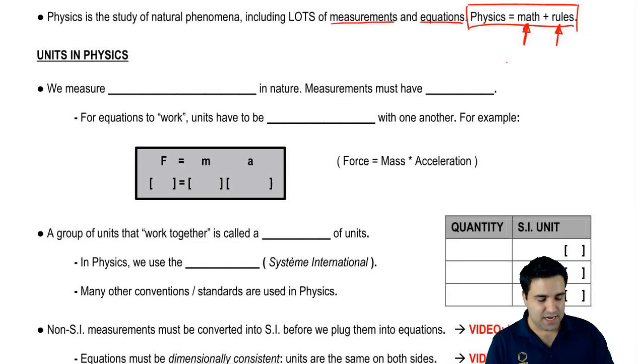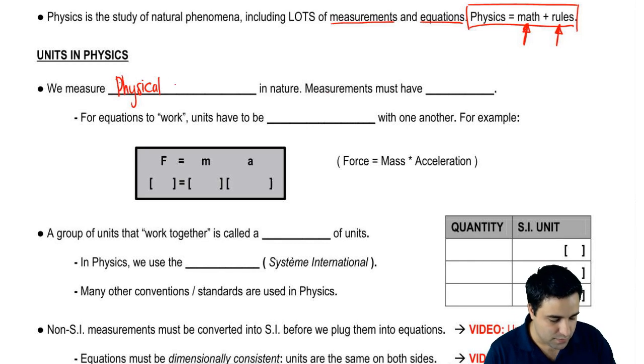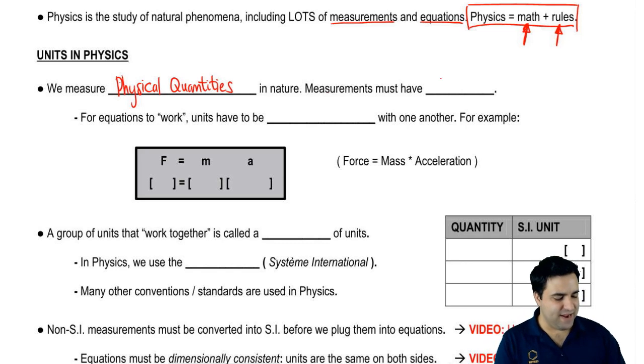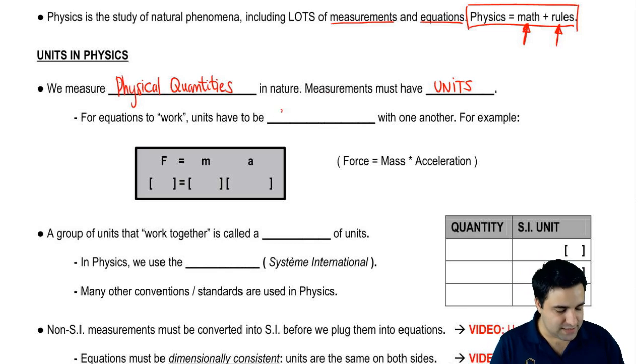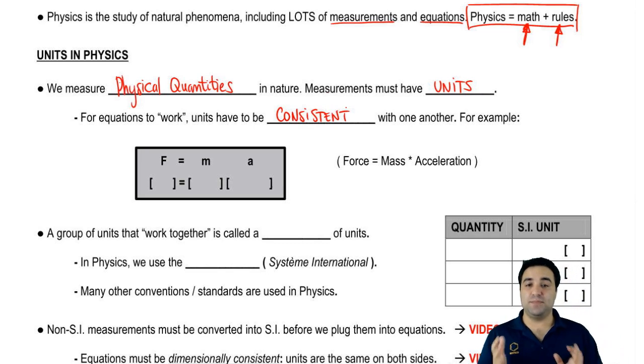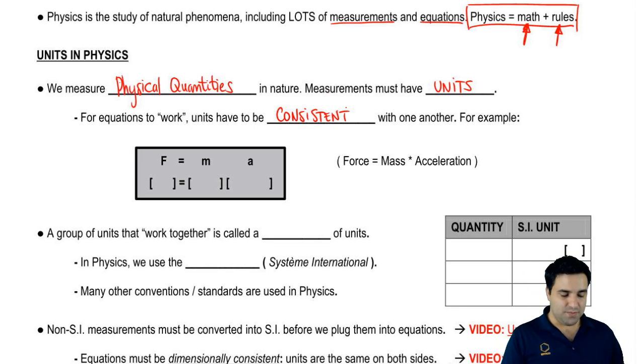In physics and in any other science, we measure physical quantities. And measurements have to have units for them to make sense. Now, for equations to work, these units must be consistent with one another. I like to think of it as they have to speak the same language so that they can communicate.